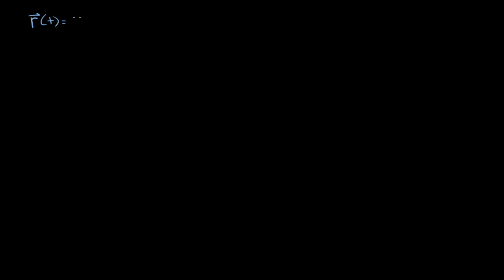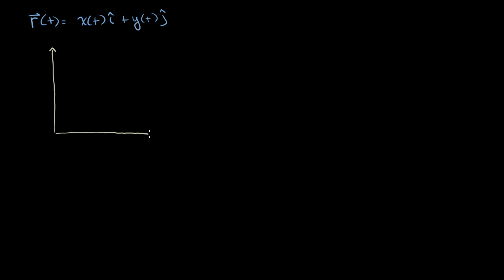Let's say I have a position vector function r(t) equal to x(t) times the unit vector i plus y(t) times the unit vector j. Let me graph this. So that's my y-axis, that is my x-axis. And r(t) is for t between a and b.